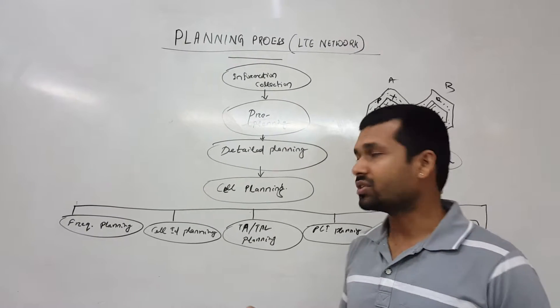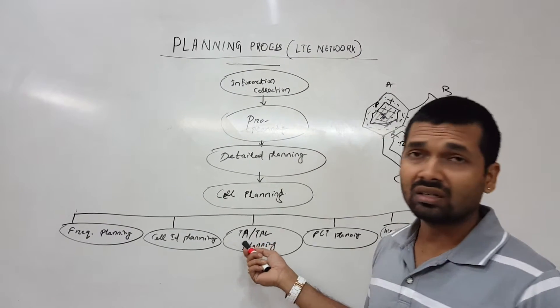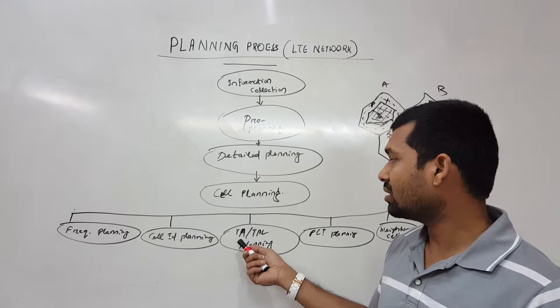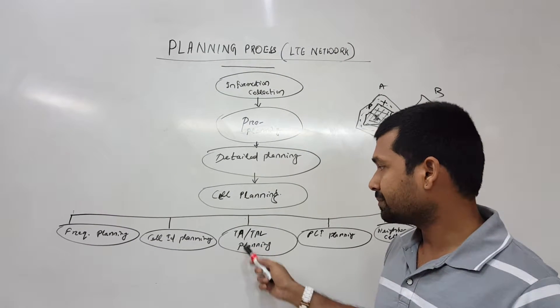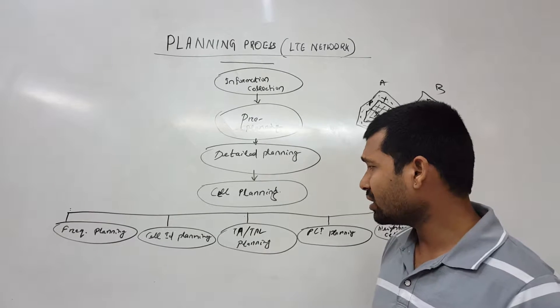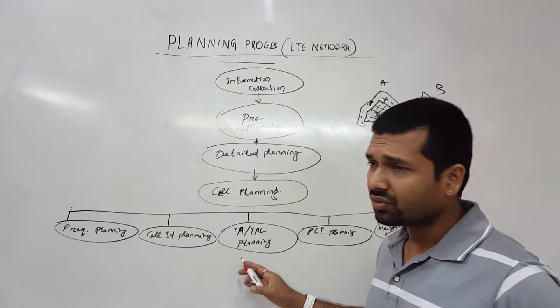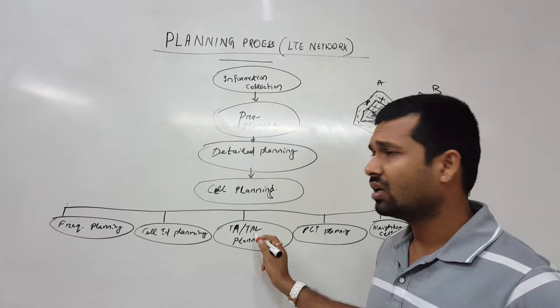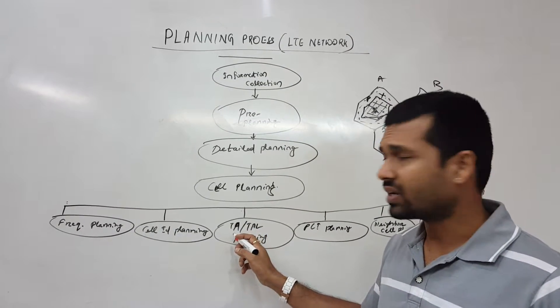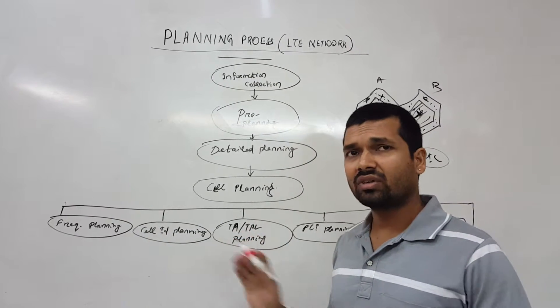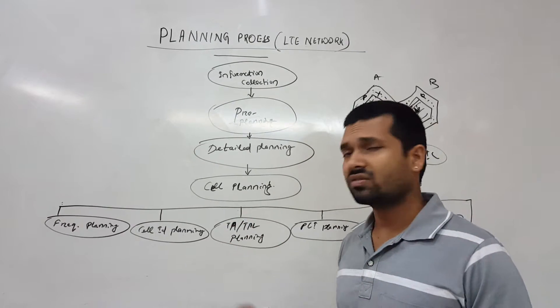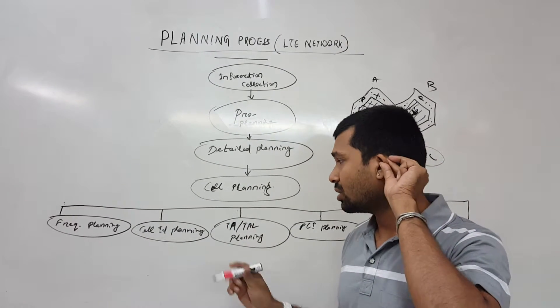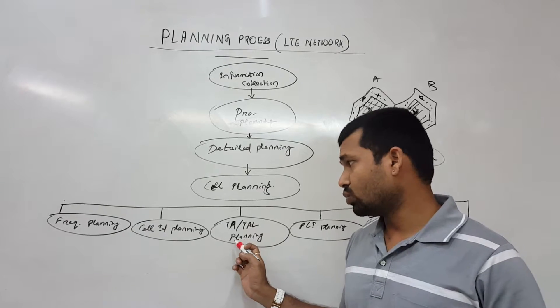Then TAC, TA, and TAL planning. This is basically same as the LAC planning in 2G or the routing area RA planning in 3G. We are having tracking area in 4G so for tracking area we do plan. We are having certain amount of node Bs planned in a tracking area. And again, TAL is a superset of tracking area. So within a TAL we are having many tracking areas and within a tracking area we are having many node Bs. So TAL plan we need to do.